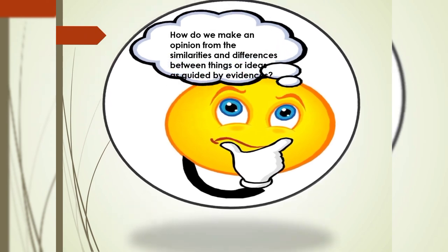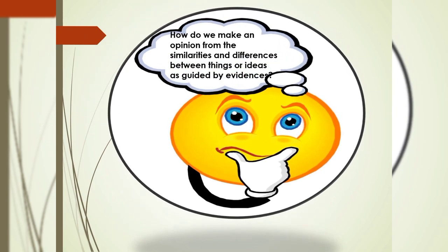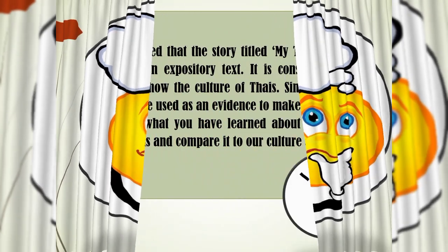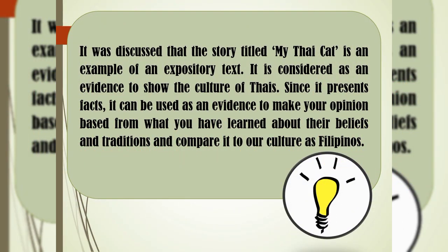Moving on to the third question: How do we make an opinion from the similarities and differences between things or ideas as guided by evidences? It was discussed that the story entitled My Thai cat is an example of an expository text. It is considered as an evidence to show the culture of Thais. Since it presents facts, it can be used as an evidence to make your opinion based from what you have learned about their beliefs and traditions and compare it to our culture as Filipinos.